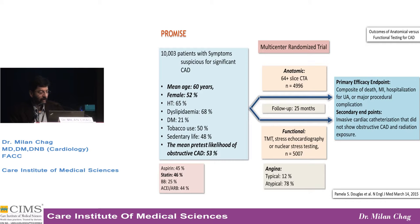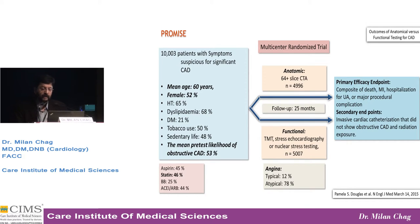Almost 50% of patients were on good preventive medicines, including statins. Either anatomic assessment was done by 64 or more slice CT angiography, or functionally they were assessed by TMT, stress echocardiography, or nuclear stress imaging. Follow-up was for 25 months. The primary endpoint was a composite of death, MI, and hospitalization for unstable angina or major procedural complication. The secondary endpoint was invasive cardiac catheterization that did not show obstructive CAD, and radiation exposure.